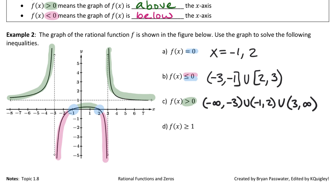Question D asks where this function is greater than or equal to 1. Since 1 is the horizontal asymptote, we're looking for where the graph is above that end-behavior line. There are two pieces above the horizontal asymptote, but you can never actually touch an asymptote, so no brackets are used. The answer is from negative infinity to -3, or from 3 to infinity.